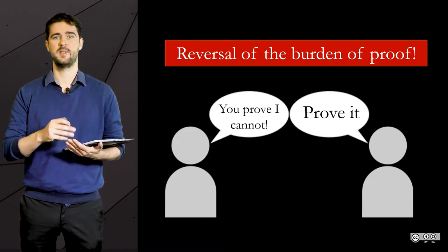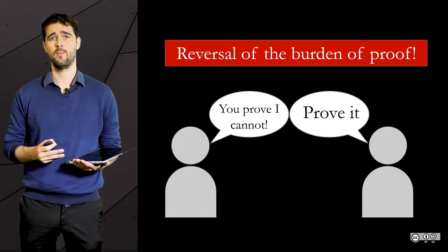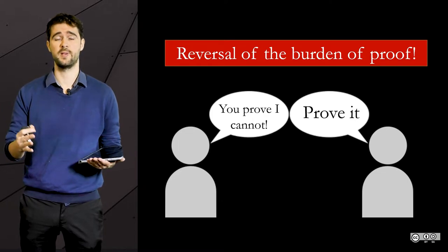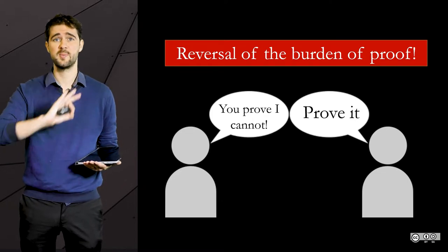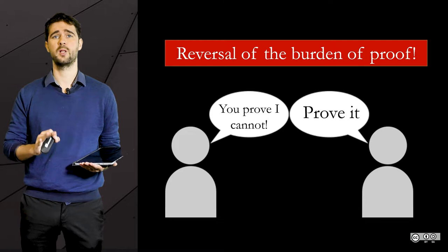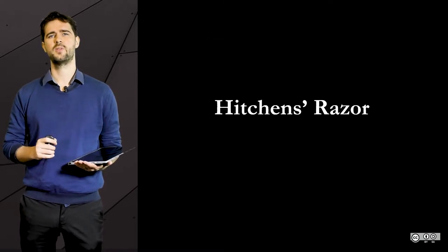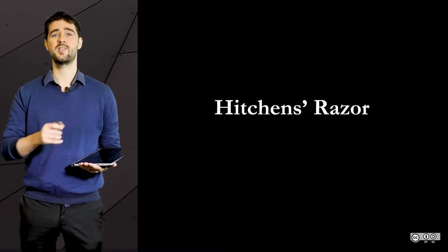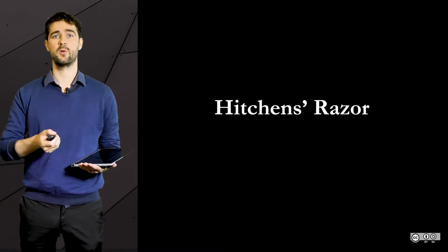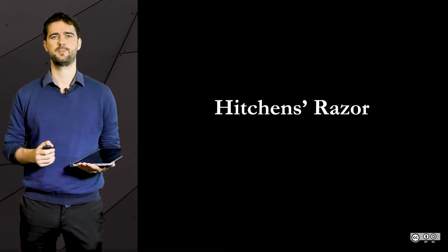And when this kind of thing happens, well, you don't have to do anything. You don't have to prove anything — you can just dismiss the claim by using what we call the Hitchens razor. So let's elaborate on the burden of proof, or what we call onus probandi in Latin, if you want to sound a bit posh.